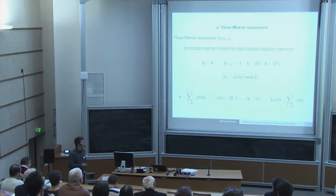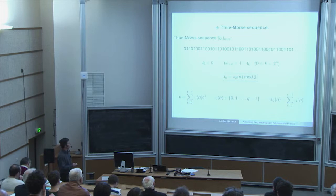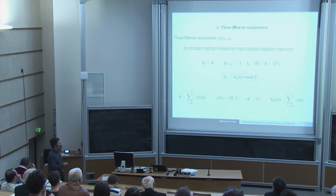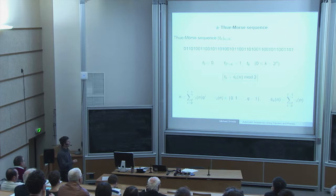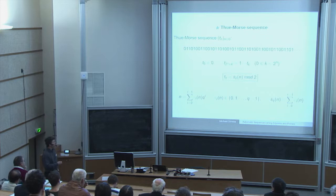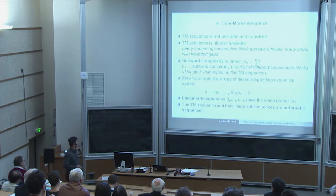If you consider the binary expansion of an integer — so q equals two — then the binary sum of digits function is the sum of digits, or the number of powers of two needed to represent n. If the sum of digits is even, the Thue-Morse sequence is zero; if it's odd, the Thue-Morse sequence gets one. So the sum of digits function is closely related to the Thue-Morse sequence.